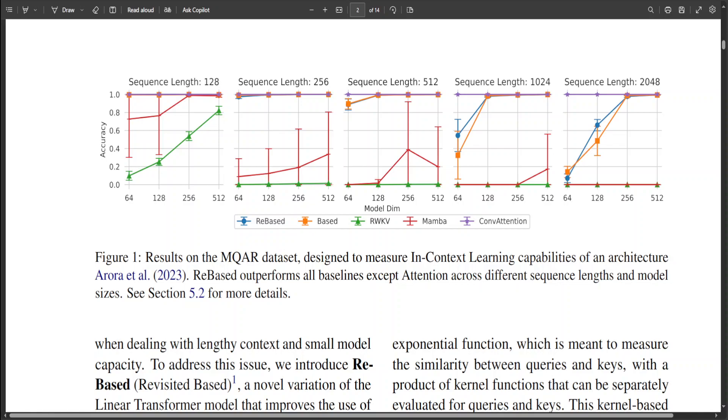They additionally included experiments on sequence length 128 and 16 QK pairs to demonstrate that RWKV can achieve decent accuracy only when dealing with such simple tasks.